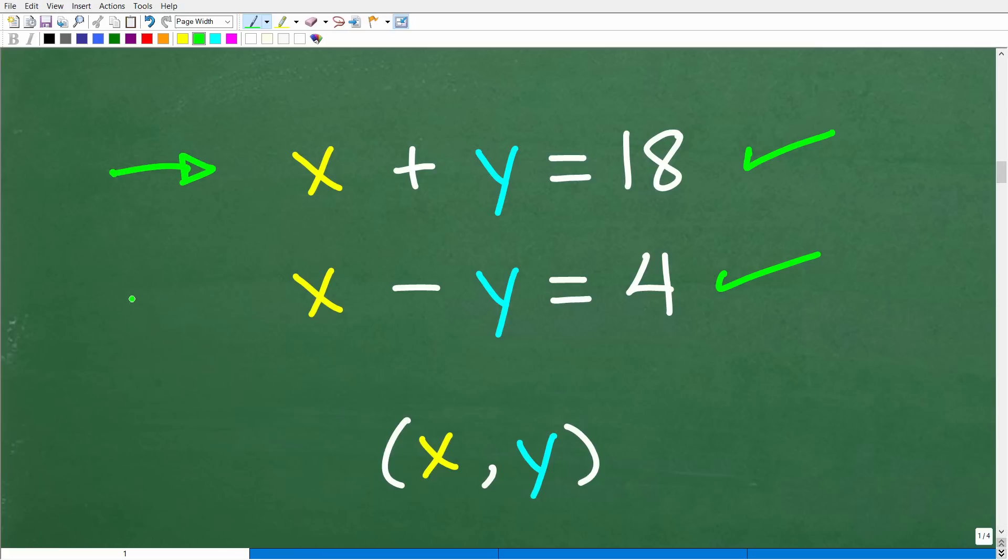Now let's take a look at something here. This is really important in algebra. Notice we have two variables, x and y, and we have two equations. So typically you need the number of equations equal to the number of variables that you're looking to solve for. So here we're looking to solve for two variables, so we're going to need two equations.